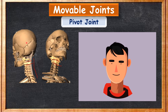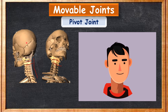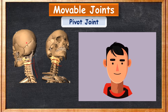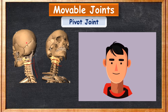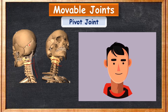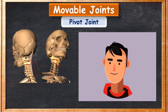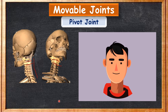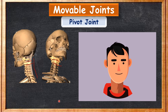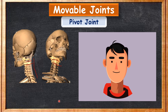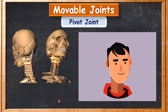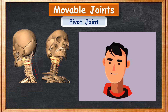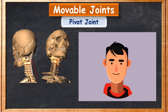The pivot joint is the place where the skull is joined to our spine. The first two vertebrae of the vertebral column (spine) are joined to the skull. This joint helps us to move our head sideways and upward and downward.